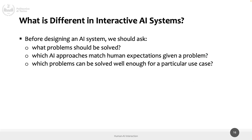This is a fundamental difference when interacting with an AI system compared to a normal system. So before designing an AI system, we should ask: what problems should be solved? The decision to use or not use AI is fundamental. Maybe there's a problem for which you don't need AI at all, and you use it in a product because it's easier to sell. The decision should be linked to a specific problem, the setting, which AI approaches match human expectations, and which problems can be solved well enough for a particular use case.